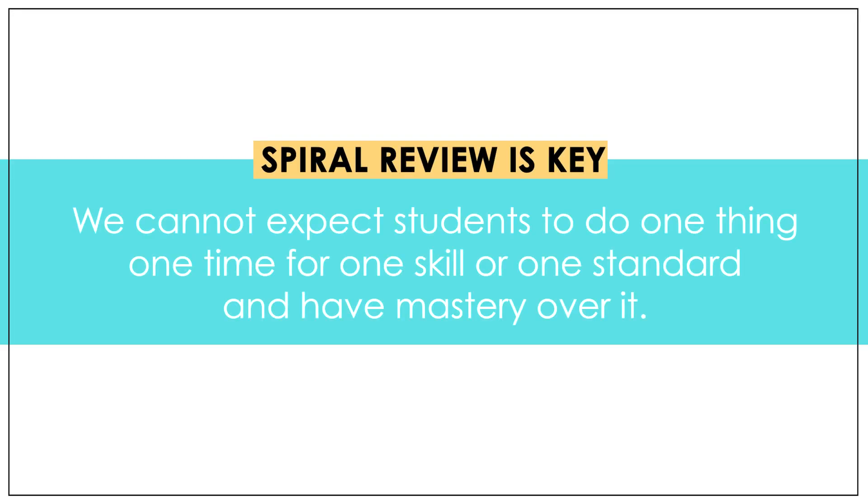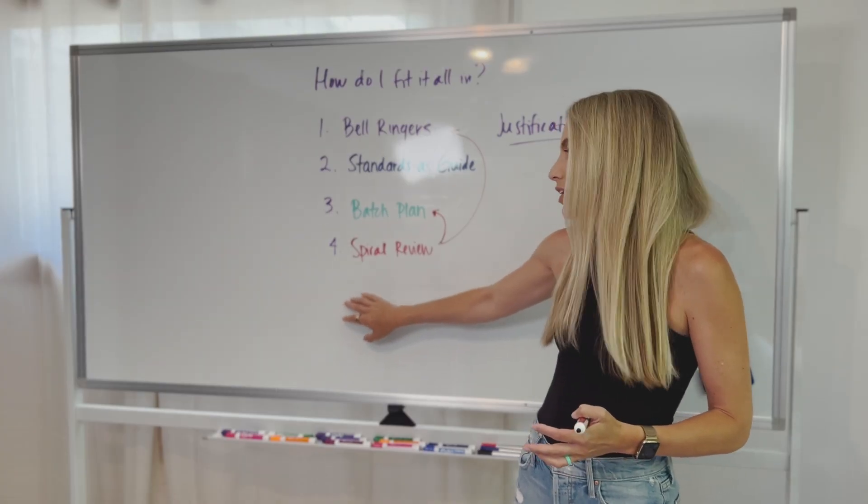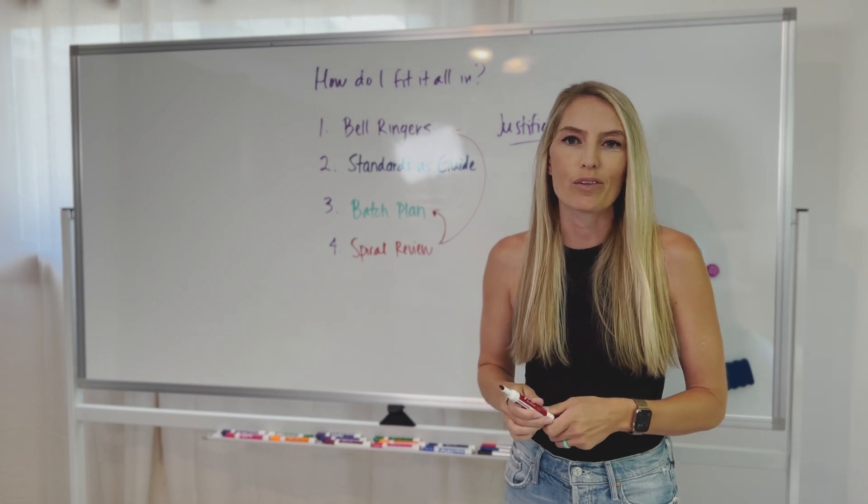But this spiral review is key. We cannot expect students to do one thing one time for one skill or one standard and have mastery over it. That's simply not how life works. It's not how it works. So we really get to be cognizant of spiral reviewing our content with our students.